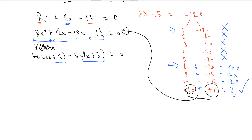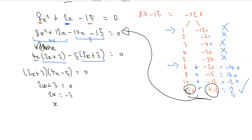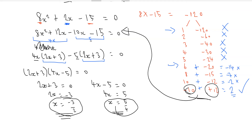We factor out 2x plus 3, leaving 2x plus 3 times 4x minus 5 equals 0. From 2x plus 3 equals 0, we get 2x equals minus 3, so x equals minus 3 over 2. From 4x minus 5 equals 0, we get 4x equals 5, so x equals 5 over 4. Those are our solutions.